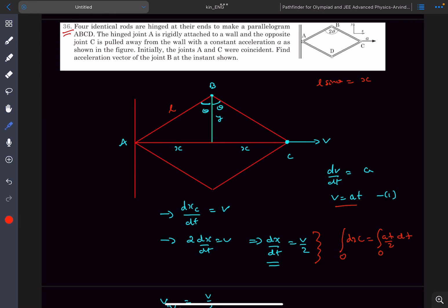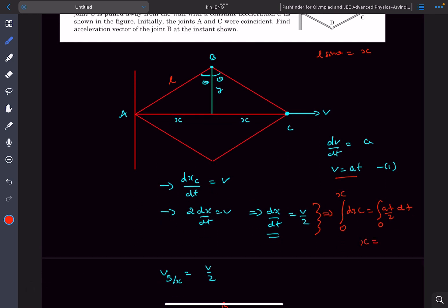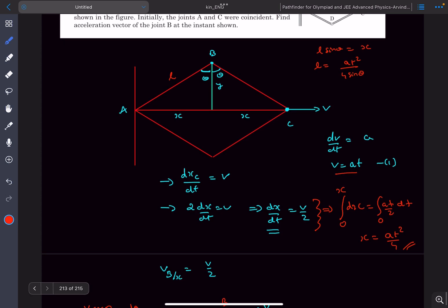So at any general time t the value of x is x and from here we'll get the value of x as a function of time to be AT squared divided by 4. So as we have x now the value of L is going to be AT squared upon 4 sin theta. So now we have got L.